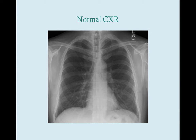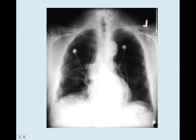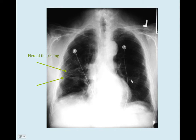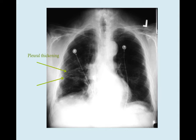This is a normal chest X-ray for comparison. And this is a patient with asbestosis. Some of the findings we see here are pleural thickening — notice how it's linear. We also have some pleural thickening on the other side, though it's not as prominent. As the patient's asbestosis gets worse with more infiltrates, you won't see that pleural thickening as clearly because it blends in with the rest of the infiltrates. We also have some diaphragmatic calcifications.